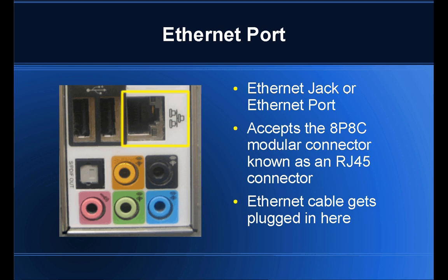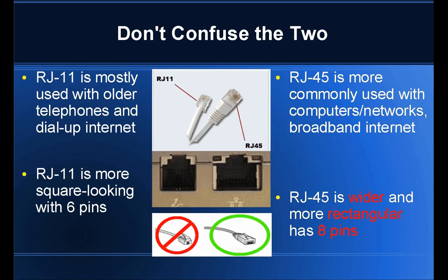Essentially, the ethernet cable gets plugged into the ethernet port, and the RJ45 is the little clear bit of plastic that gets shoved in there. If you look at this picture in the middle here, you see another ethernet port sitting right next to the RJ11 port. The RJ11 connector looks very similar to the RJ45 — it's just a little smaller and more square than the rectangular RJ45.